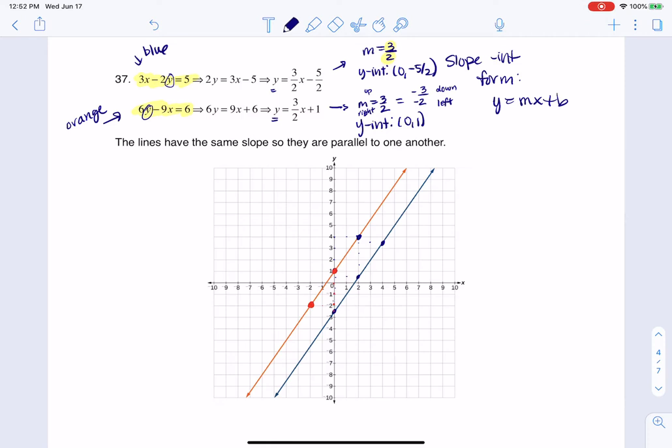whereas when they're both positive, I'm going to go up and right. Because the slope is always telling us to move in 2 of 4 directions: up, down, left, right. So I've got to pick one of the up-downs, and one of the left-rights.